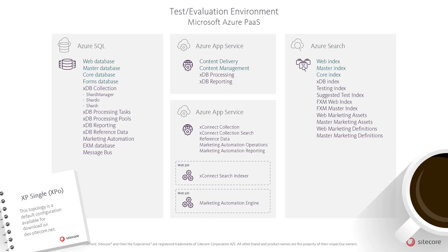The XPSingle topology is also available for Azure PaaS deployments, where all core roles — that is the content delivery, content management, processing and reporting — will be running in a single app service, and all XConnect and XDB roles in a separate app service. This configuration is available on dev.sitecore.net as a pre-configured ARM template for Azure PaaS.